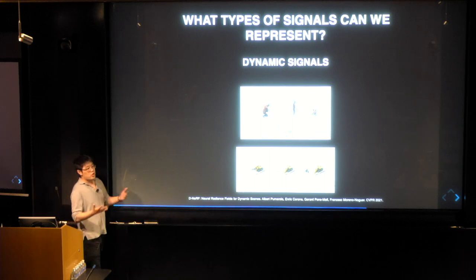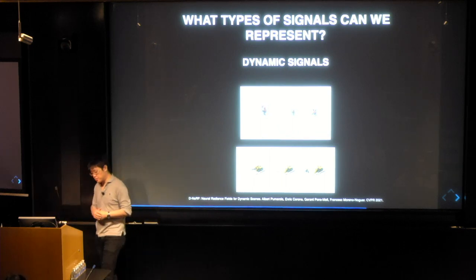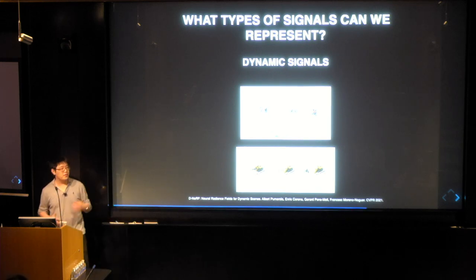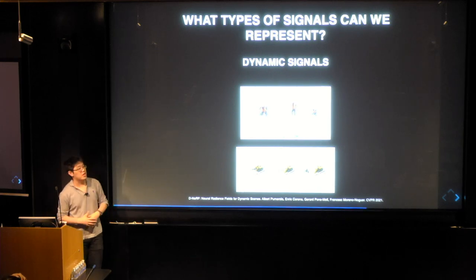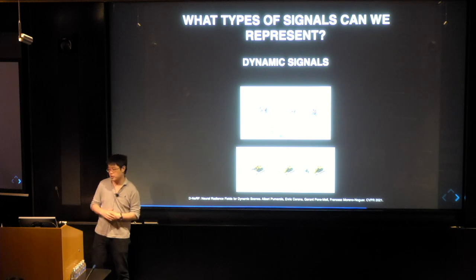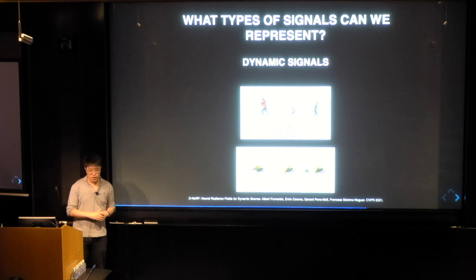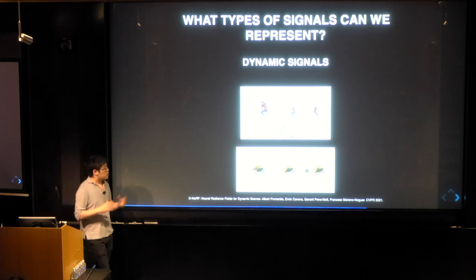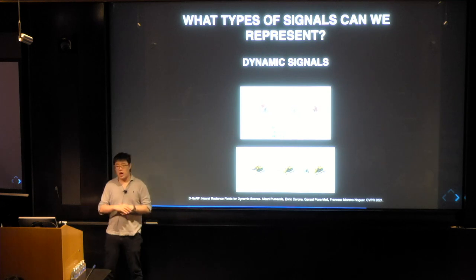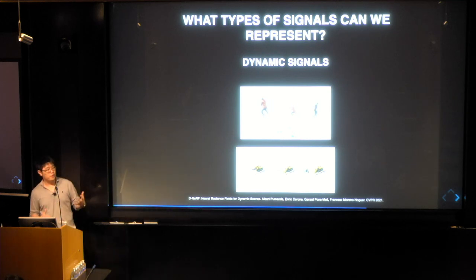A natural extension is to extend the number of dimensions. This has been very popular recently — the idea of a dynamic NeRF where the underlying signal changes as a function of time. Video, for example, is very popular, as well as the latents we've also seen.